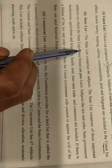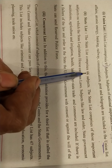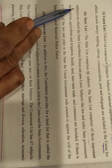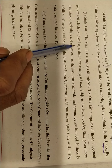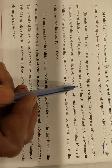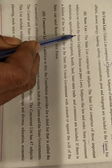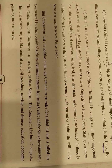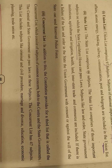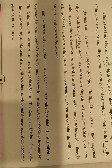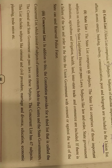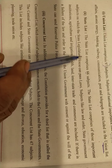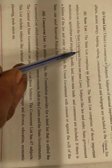The State List comprises 66 subjects — those important subjects on which the state legislature (like the Vidhan Sabha in Gandhinagar) can pass laws. The 66 subjects that the state Vidhan Sabha can pass laws on include law and order, state government institutions, agriculture, irrigation, health, and education.